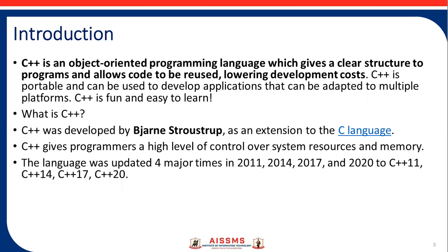C++ was developed by Bjarne Stroustrup and is an extension to the C language. C++ gives programmers a high level of control over system resources and memory. The language was updated four major times: in 2011, 2014, 2017, and 2020, to C++11, C++14, C++17, and C++20.